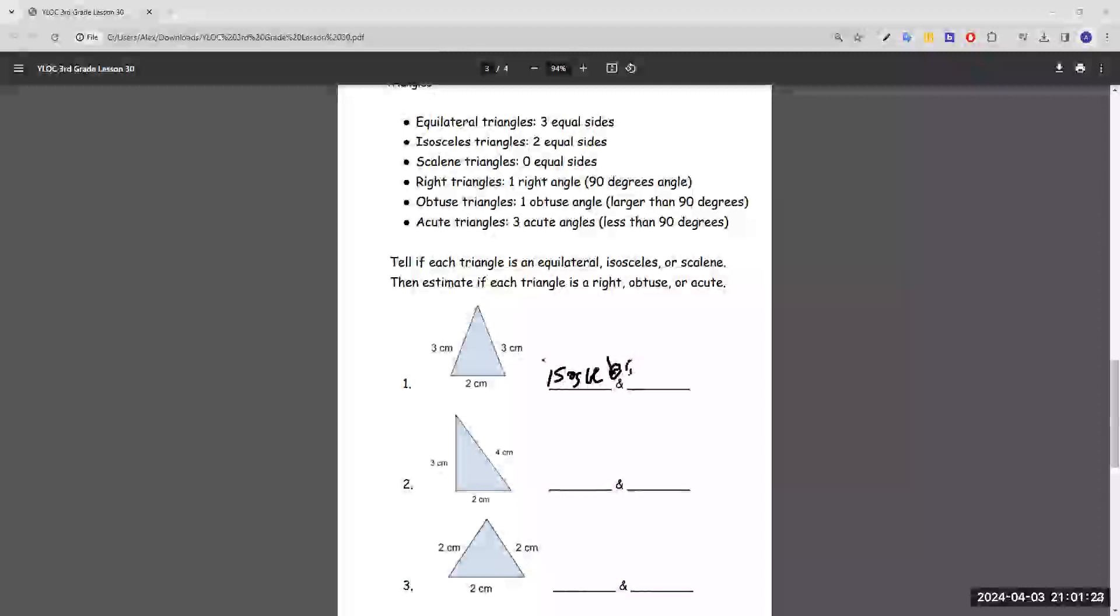Now we need to know about the angles. So to define the angles, we base it off of 90 degrees, if it's larger, less, or equal to 90 degrees. And we do it off this angle, this angle, and this angle, the three angles in a triangle. And all three of these angles are less than 90 degrees, because 90 degrees would be this much.